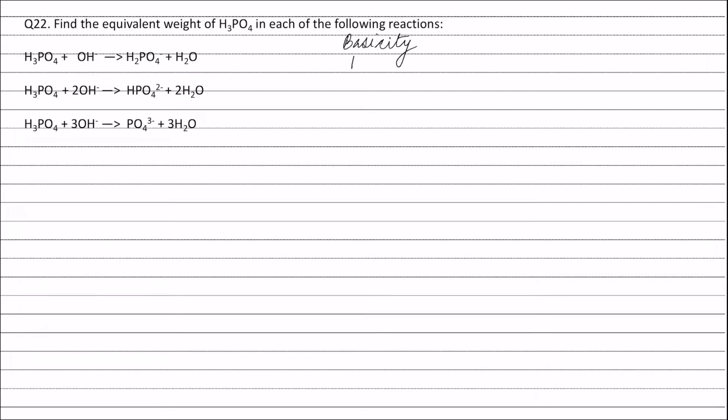In the second reaction, H3PO4 furnishes two moles of H+ ions, which combine with two moles of OH- ions to form two moles of H2O. Therefore, the basicity of H3PO4 in the second reaction is two.